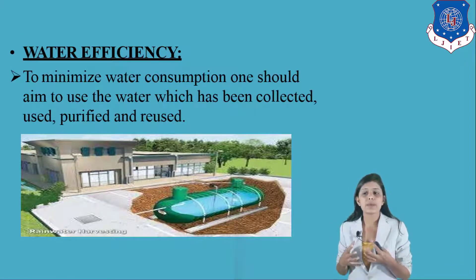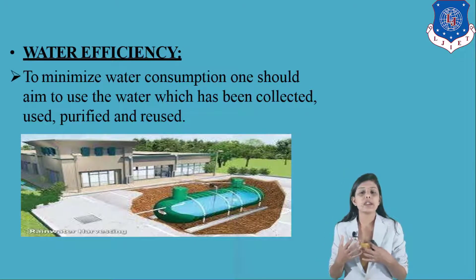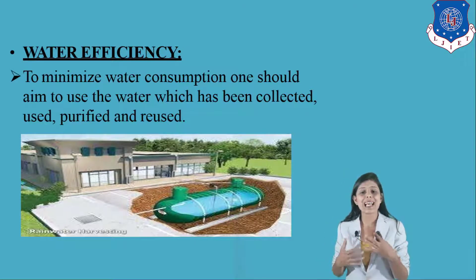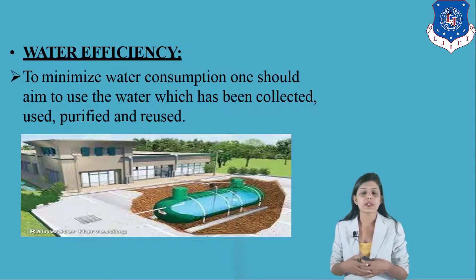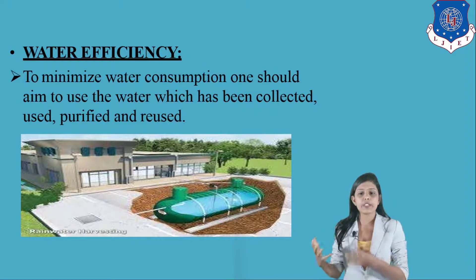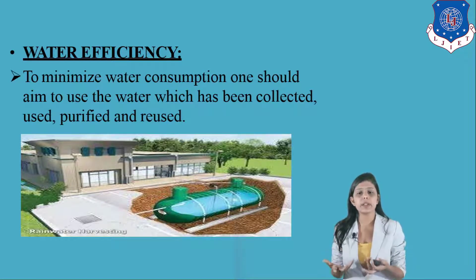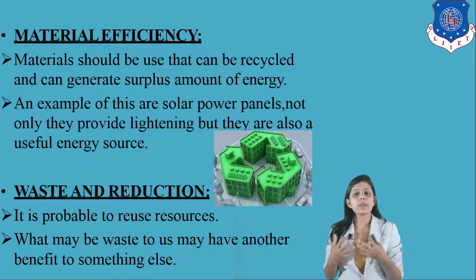For water efficiency, to minimize water consumption one should aim to use water that has been collected, used, purified, and reused. Recycled water should be utilized in places where it can be used, such as toilet flushing and gardening. We can also develop a rainwater harvesting system where water is collected and utilized for different purposes within the green building.